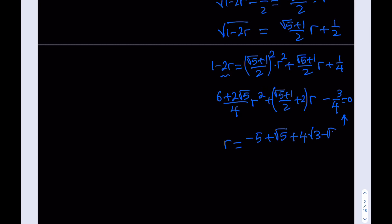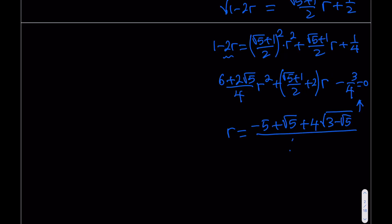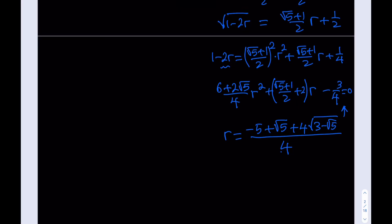The small r ends up being — noting that there are two solutions but the product from Vieta's is negative so one root is negative, which we discard — the acceptable answer is r equals (negative 5 plus root 5 plus 4 times the square root of (3 minus root 5)) divided by 4. That's a really radical expression, but that's the value of small r.